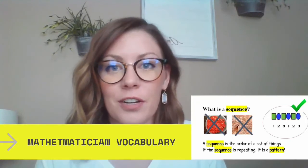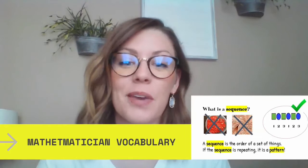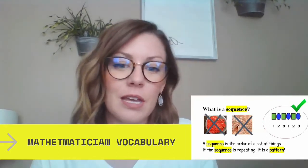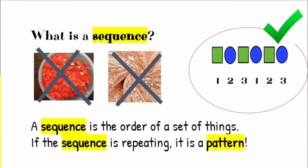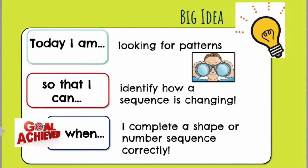Whether you are going into kindergarten or first grade, you are a mathematician, and mathematicians need to have a good vocabulary. So let's talk about another word we will use for our math lesson today: sequence. So what is a sequence? The first thing that comes to my head are those really pretty, shiny beads you might see on decorations or clothing — but the sequence we're talking about today is what you can find in the order of a set of things. If a sequence is repeating, it is a pattern. Today we're looking for patterns so that we can identify how a sequence — the order of something — is changing, and our goal will be achieved when we complete a shape or a number sequence correctly.